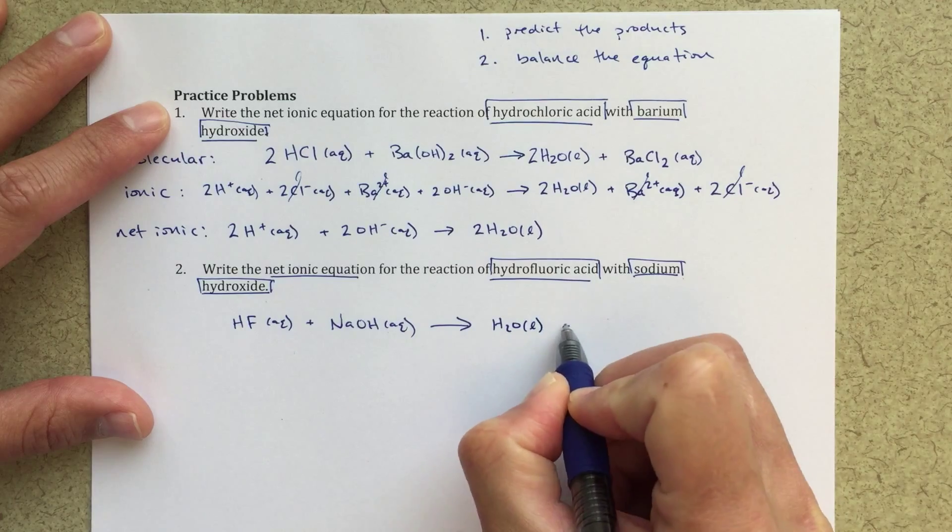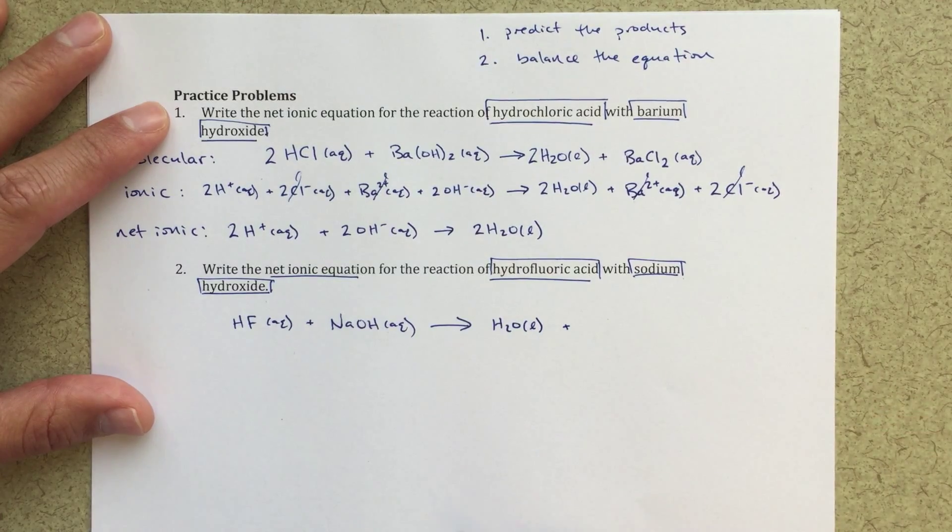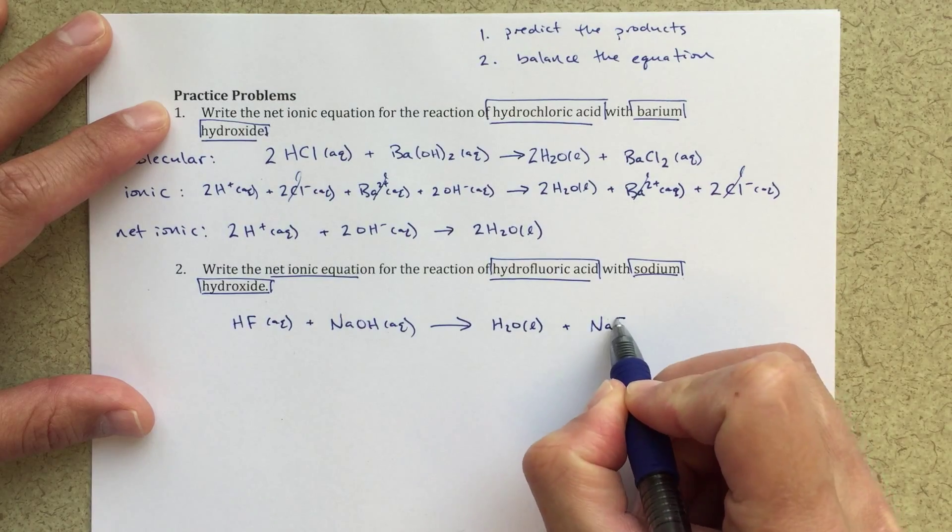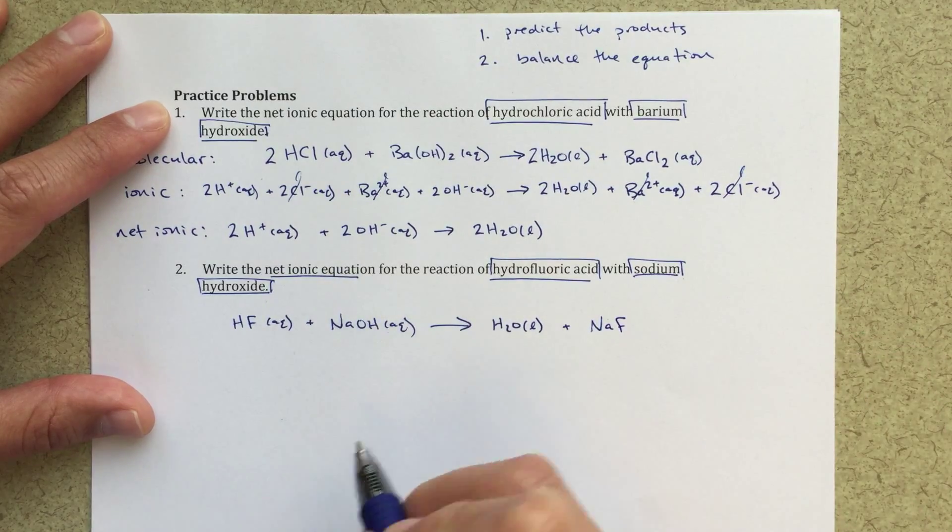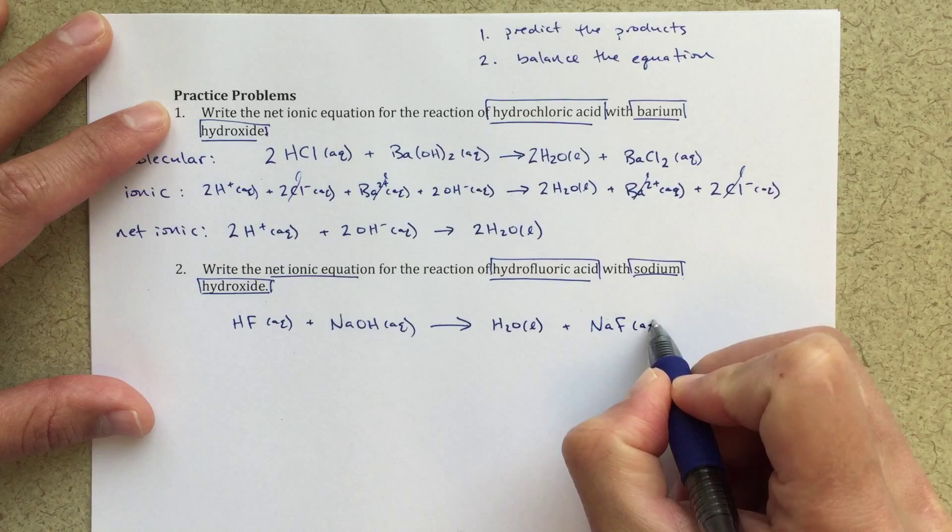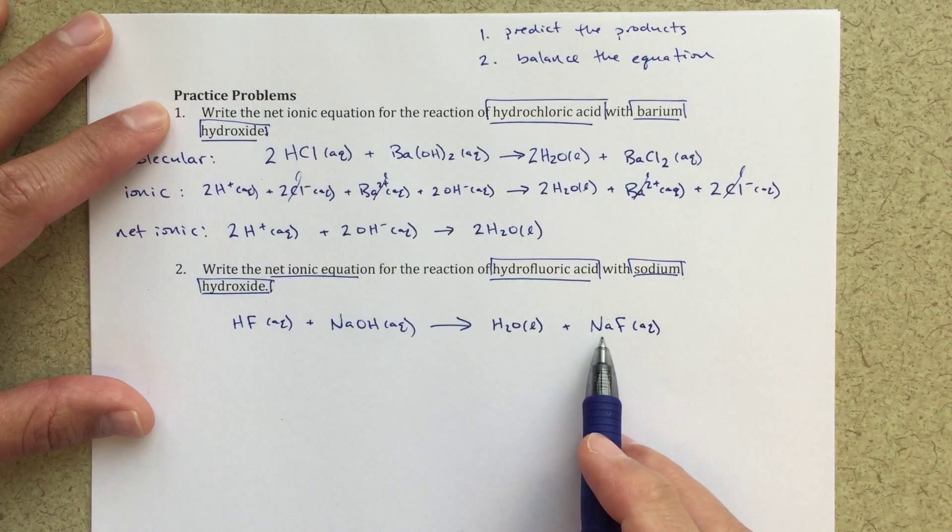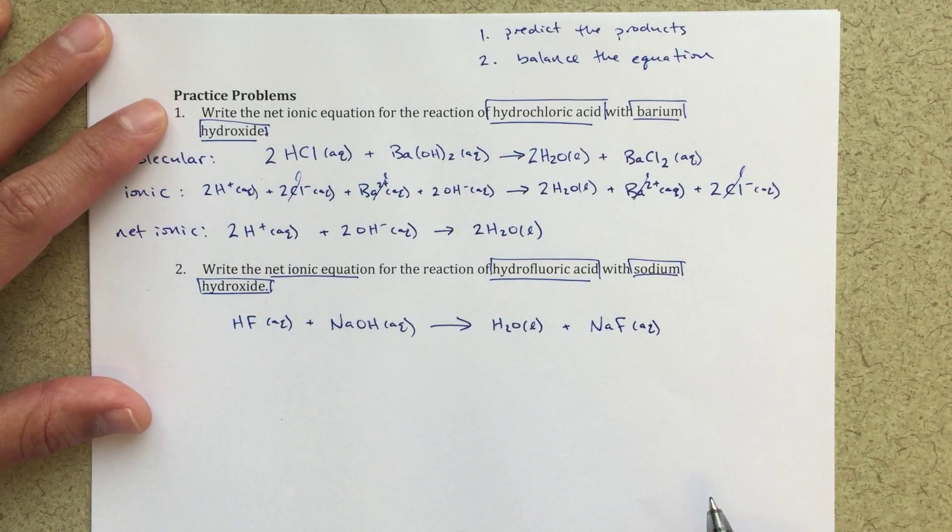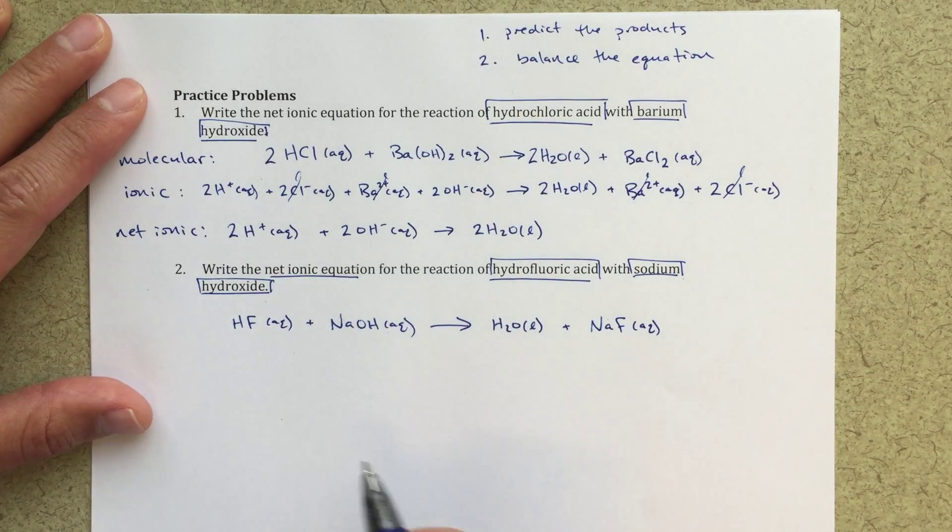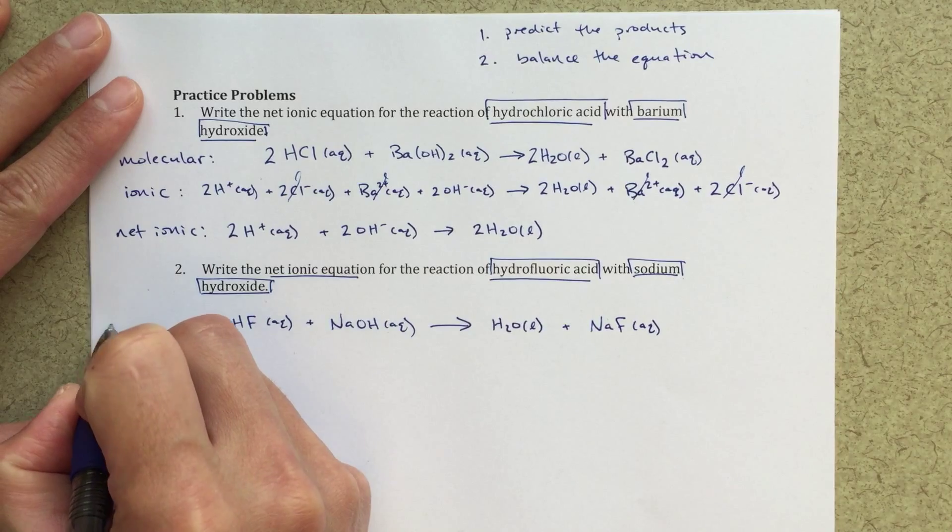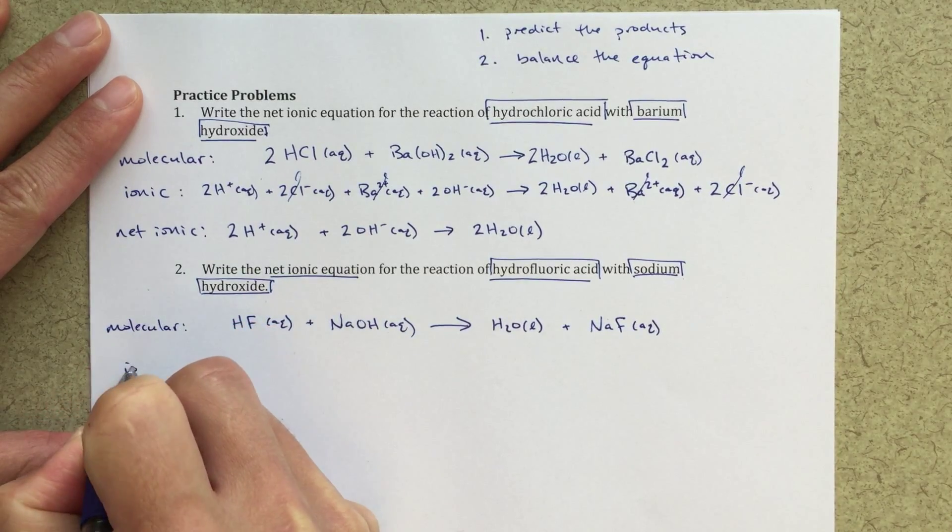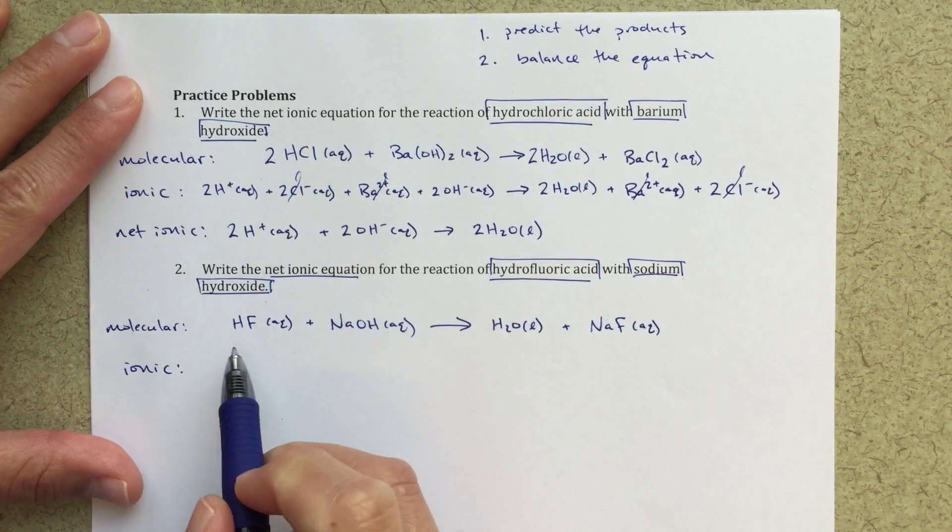Right away I've got an acid, I've got a strong base. I recognize sodium hydroxide is a strong base, so I know I'm gonna form water. It's my neutralization product. Then I'm gonna form sodium fluoride. I'm sort of just taking what's left over. Sodium fluoride will be aqueous - anything that has sodium in it will dissolve. This is my molecular equation.